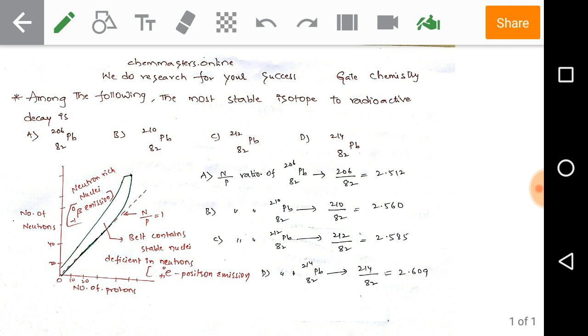For option A, 206 divided by 82 gives a neutron to proton ratio of 2.512. For B, we get 2.560. For C, we get 2.585. And for D, we get 2.609.